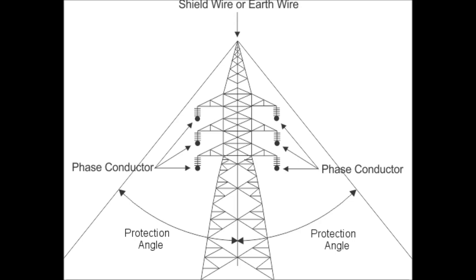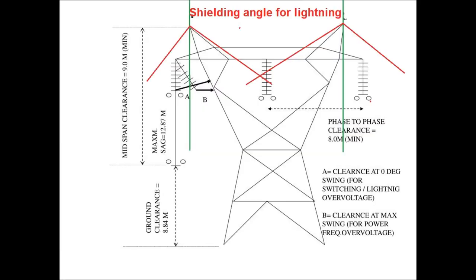If the span between phase-to-phase conductors is more, then instead of one earth wire, two earth wires are used in the transmission tower. Here a 400 kV single circuit tower has been shown in this diagram where two earth wires are used. How the shielding effect is provided by two earth wires has been shown in this diagram.